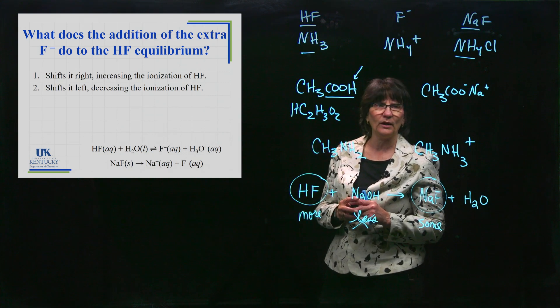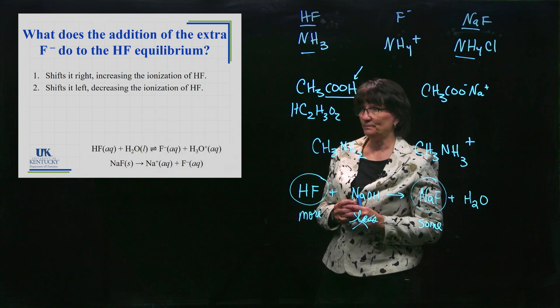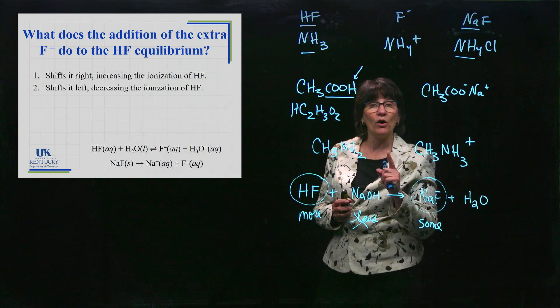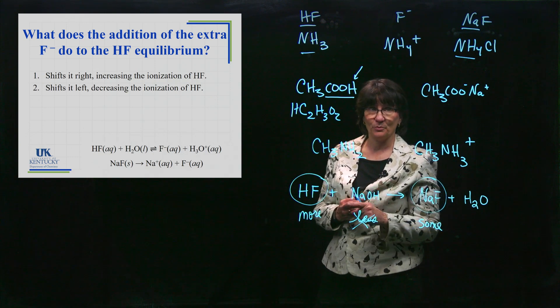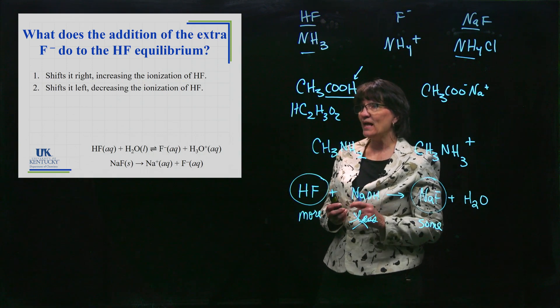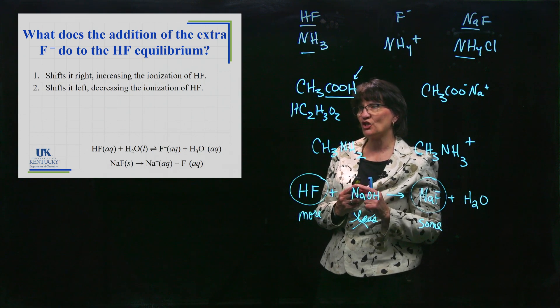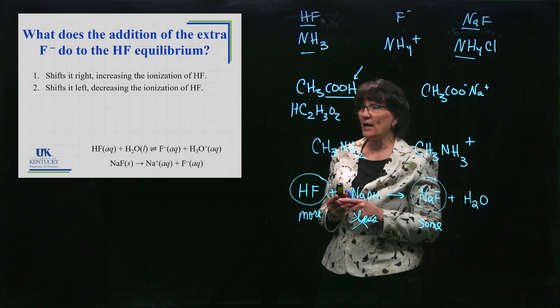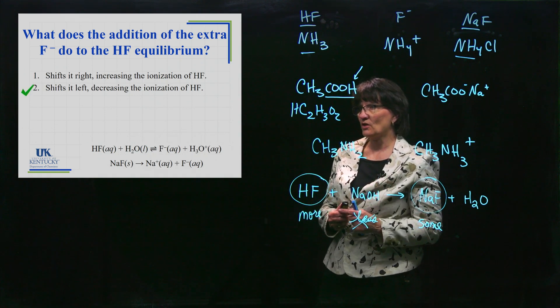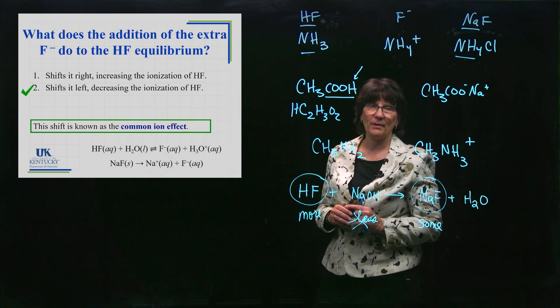Consider that top equilibrium there. You come along and you dump some NaF into that solution and you see the ions present. What does that extra F minus do to the equilibrium? I want you to think Le Chatelier's principle - when you apply a stress it shifts to try to relieve that stress. If we add the sodium fluoride, that extra F minus is going to shift that top reaction towards the left. That's a common ion scenario - it will always cause that to happen. This shift that is causing of that first reaction is called the common ion effect.